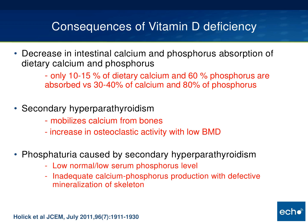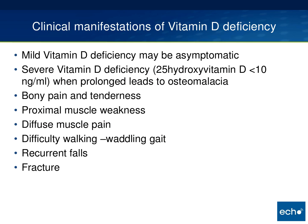Vitamin D deficiency triggers a compensatory increase in parathyroid hormone—secondary hyperparathyroidism—which mobilizes calcium from the bones and increases osteoclastic activity with resulting low bone density. There is also phosphaturia, or increased urinary phosphorus excretion, from the secondary hyperparathyroidism, leading to low-normal levels of phosphorus. This results in inadequate calcium and phosphorus with defective mineralization of the skeleton.